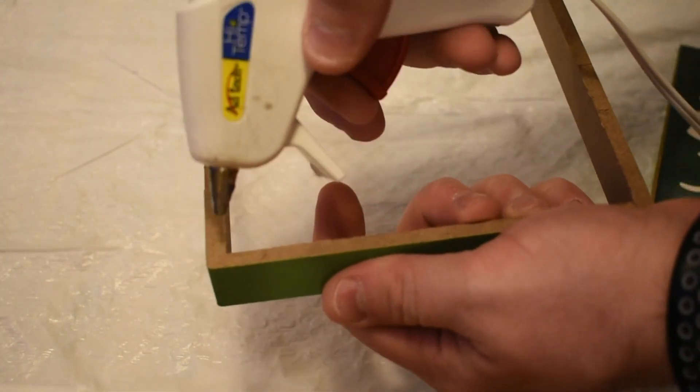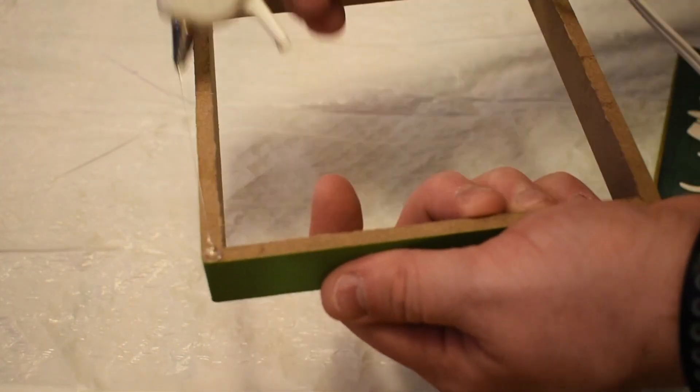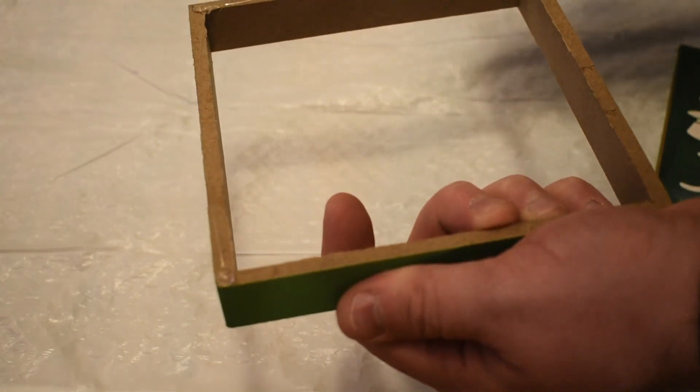Next, you're going to take some hot glue and you're going to put it around the frame, and then you're going to turn the front of the frame upside down on one of them because that's going to be the base of your lantern.